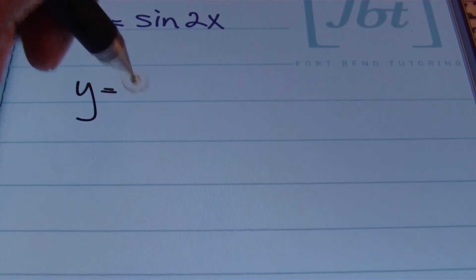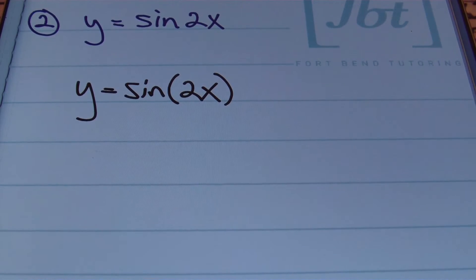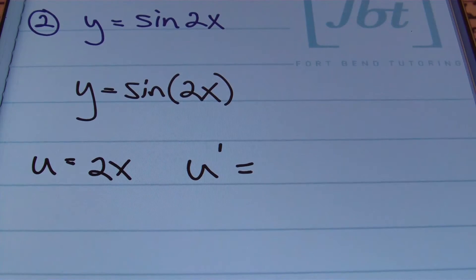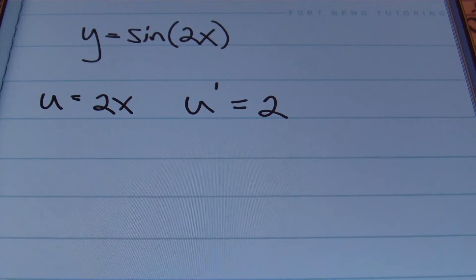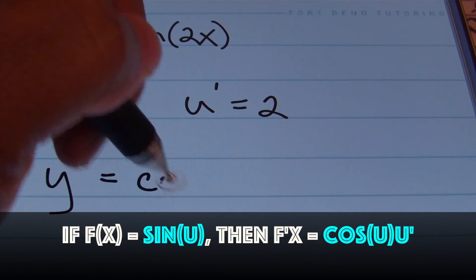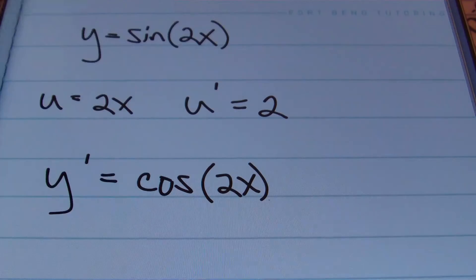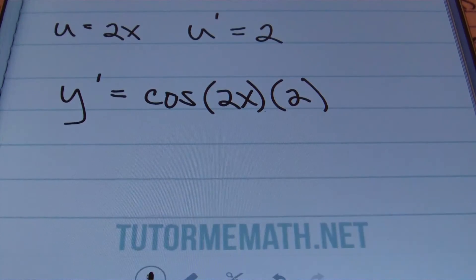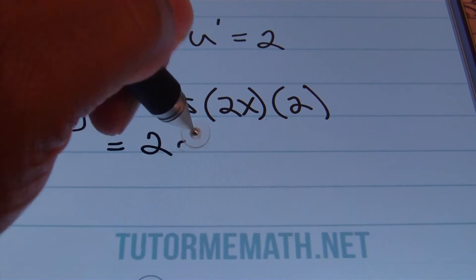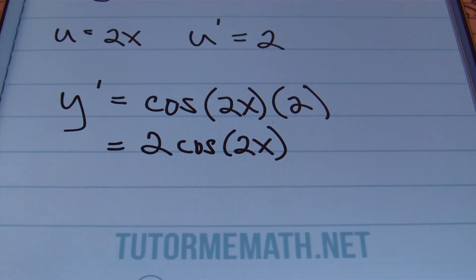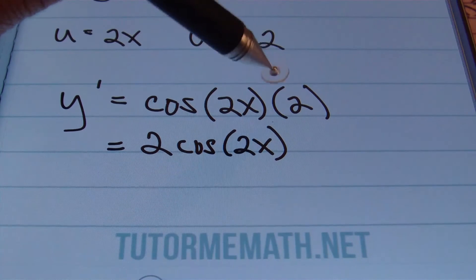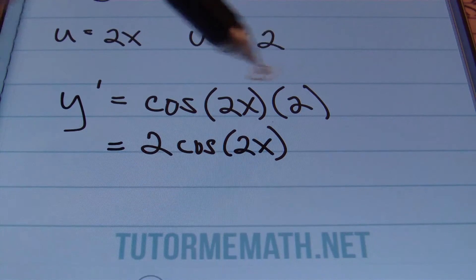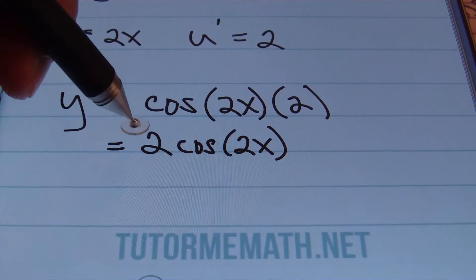In problem two we have y equals sine of 2x — often written as sine of the quantity 2x — which helps us identify our u. So u equals 2x, and u prime equals 2. Using our differentiation rules, y prime equals cosine of u, which is cosine of 2x, times u prime, which is 2. Simplifying, the answer is 2 cosine of 2x.